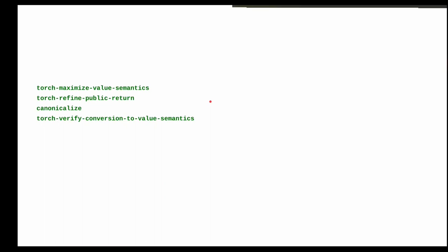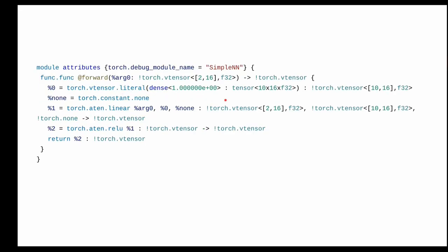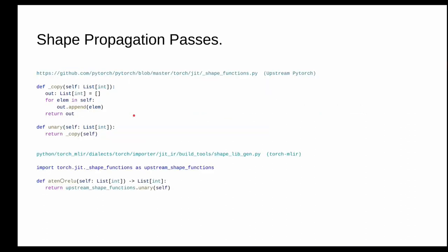After the next set of passes, every tensor in the graph is a Torch.vtensor following value semantics. However, the graph is still incomplete — tensors should have a shape and a data type (elemental type), but the result types are missing this information. The shape propagation pass leverages already-written shape functions from upstream PyTorch: given input tensor shapes as a list of integers, it returns the output shape as a list of integers. For ReLU, since it's an element-wise unary operation, the output shape equals the input shape.